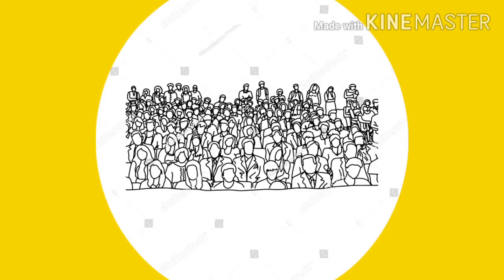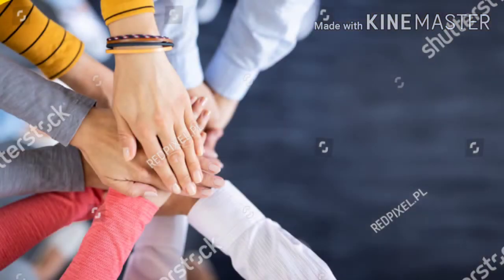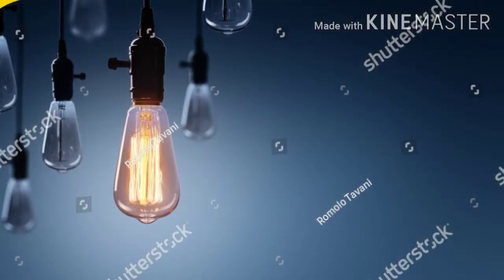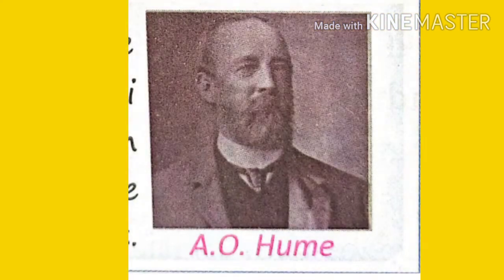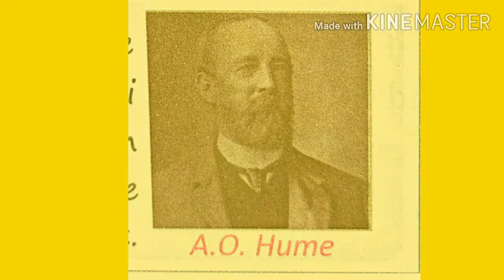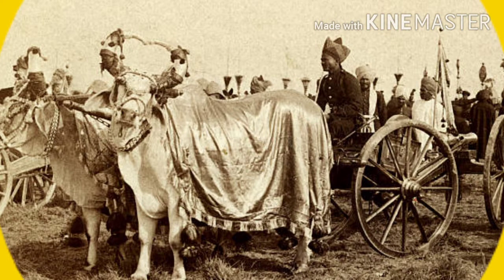The Indian National Congress was a group of educated Indians. It is interesting to know that it was started by an Englishman named A.O. Hume in 1885. The first session was attended by 72 delegates. The Congress soon spread all over the country and became the voice of the entire nation.